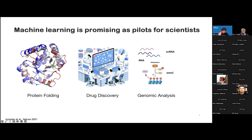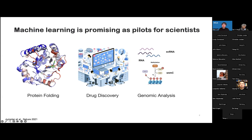First, let's talk about some background. Machine learning is promising as a tool for scientists. For example, AlphaFold has been shown effective in predicting protein folding and protein structure. A lot of graph neural networks have been proposed for drug discovery, and single-cell data integration methods have been incorporated in genomic analysis. But can this machine learning approach fully solve our real-world problems?